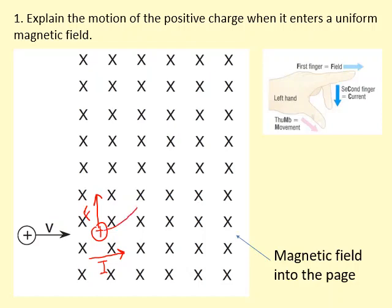So the particle is going to curve upwards like this. Now the particle is moving towards the top right, so the current is also in that direction. Applying Fleming's left hand rule again, the force is now perpendicular to that new velocity — and again it curves. You can see there is always a force at right angles to the velocity of the particle, always pointing towards the center of a circle. So the magnetic force is providing a centripetal force, causing the charged particle to move in circular motion.